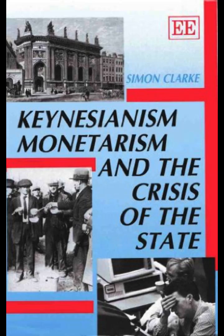First, provision should be comprehensive, including health care and the provision of family allowances — family allowances long opposed by the TUC as a subsidy to low wages. Second, provision should have a unified administration. Third, contributions and benefits should be clearly laid down, according to the contributory classes: wage earners, the self-employed, housewives, others of working age, the young and the old. Fourth, the payment of adequate benefits. Fifth, the payment of flat rate benefits, according only to family size. Sixth, flat rate contributions, of which 50% would be paid by the state, 30% by the insured, and 28% by employers.